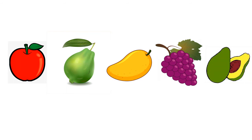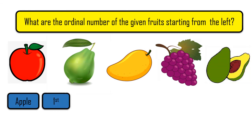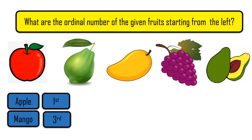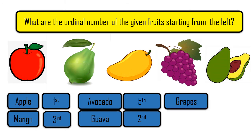Let us practice. What are the ordinal numbers of the given fruits starting from the left? The apple is first. Mango is second. Avocado is third. Grapes is fourth. Guava is fifth.